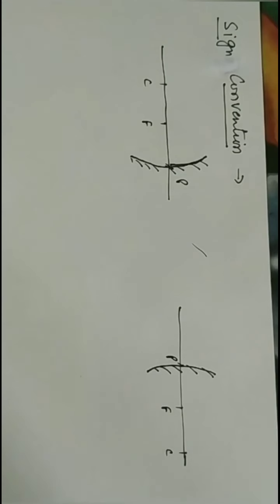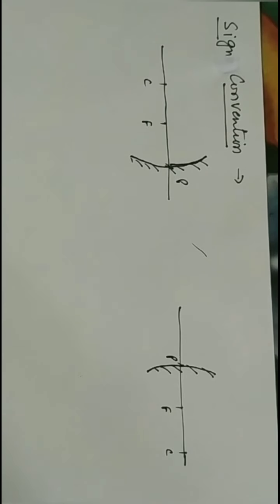In this video we will discuss sign conventions for mirrors. Sign conventions are generally used to write the object distance, image distance, and focal length in terms of signs — that is, positive or negative. These sign conventions are used whenever we solve numericals.